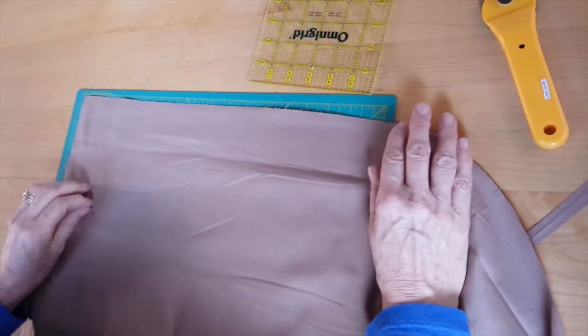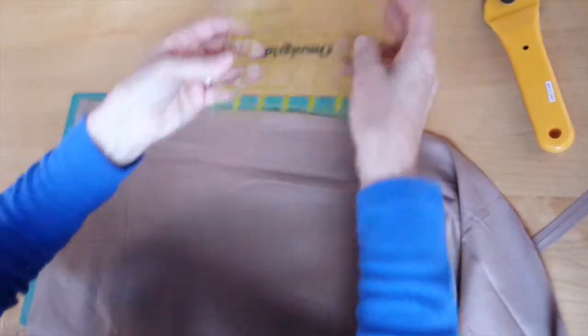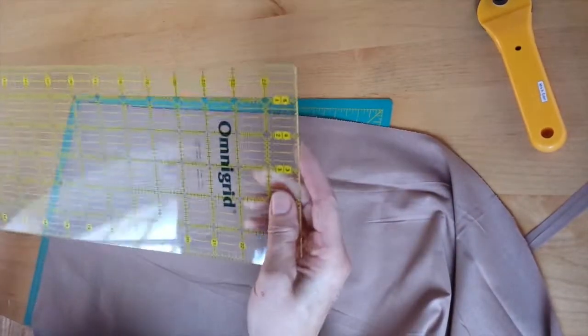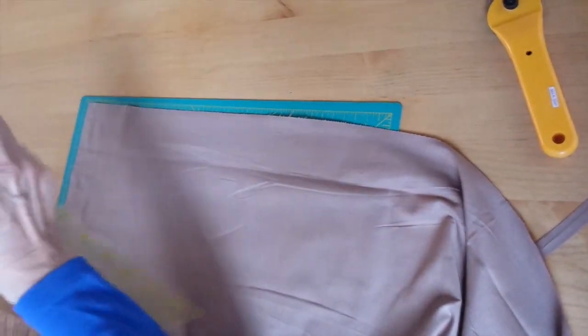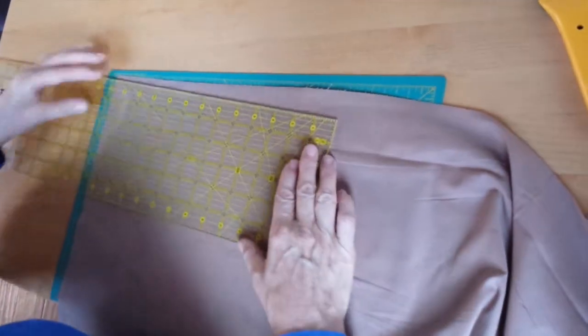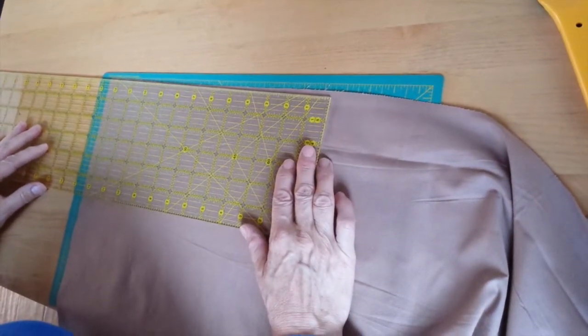So on a little mat like this you can just turn the mat round and look on your ruler for twelve and a half inches. Set that at the end there, twelve and a half inches.